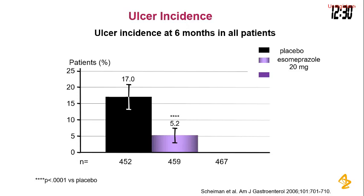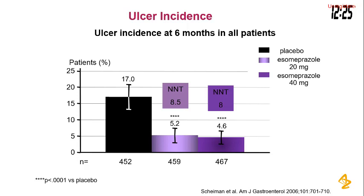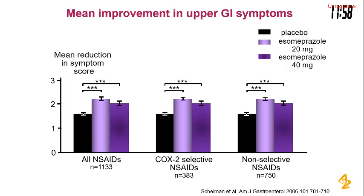The ulcer incidence in these patients was very clear: patients receiving esomeprazole either 20mg or 40mg had much lower ulcer incidence than patients who received placebo. The cumulative proportion of patients developing gastric and/or duodenal ulcer at six months was less than 20mg once daily, even in patients taking non-selective COX inhibitors. So esomeprazole 20mg can be used with NSAIDs as protection.